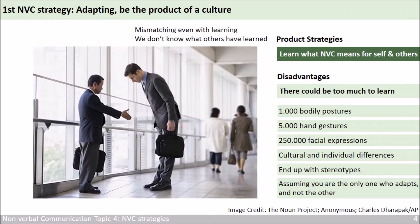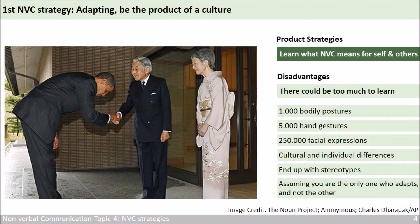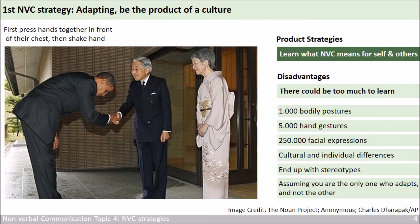Like in this picture, the western-looking man is bowing while the Asian-looking man is initiating a handshake. In a pretty awkward incident, US President Obama was bowing and shaking hands with the Japanese emperor at the same time — it looks like he was confused, so he did both. I would have advised him to follow what many of my Thai colleagues do: they first press their hands together in front of their chest, then shake hands — not both at the same time. It's beautiful, especially at the initial stage of a relationship when you want to show respect and are still unsure which path to take.